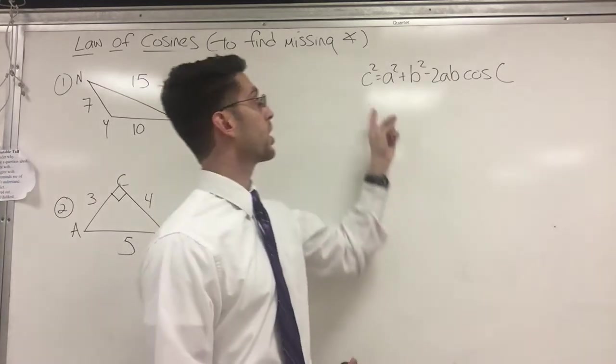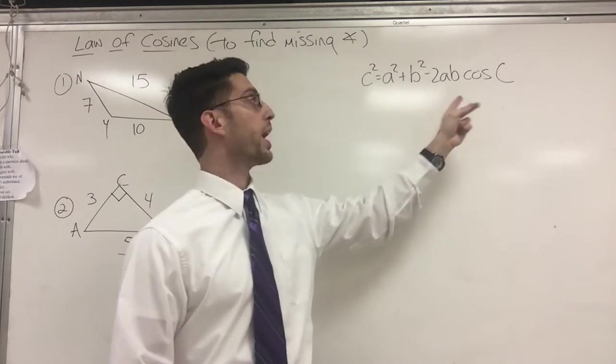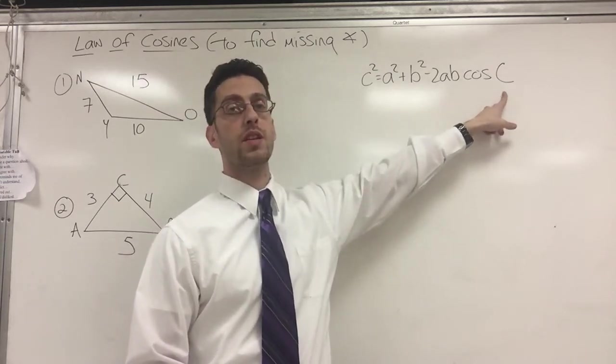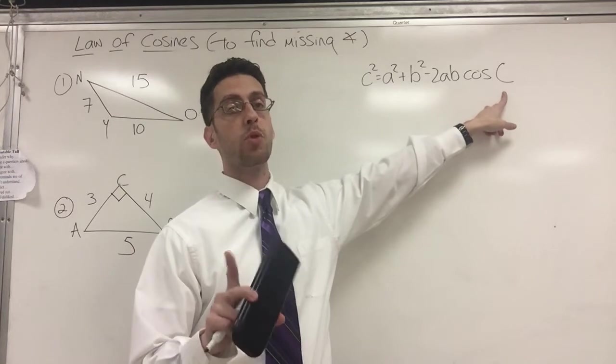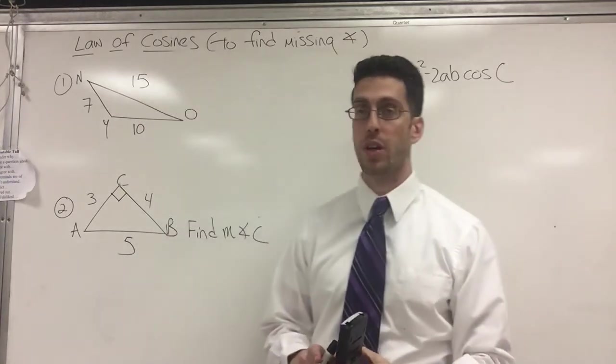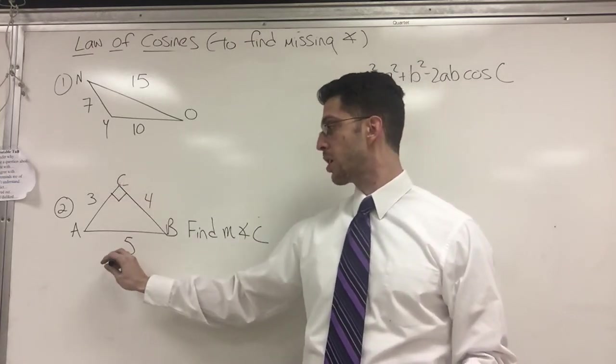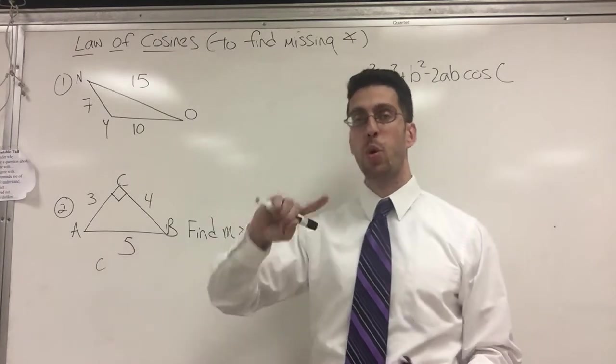The lowercase letters represent sides of a triangle and the capital letter represents the angle. And more specifically, little c and big C are opposite each other. So if you look at number two, if this is capital C, this would be lowercase c. That's important.